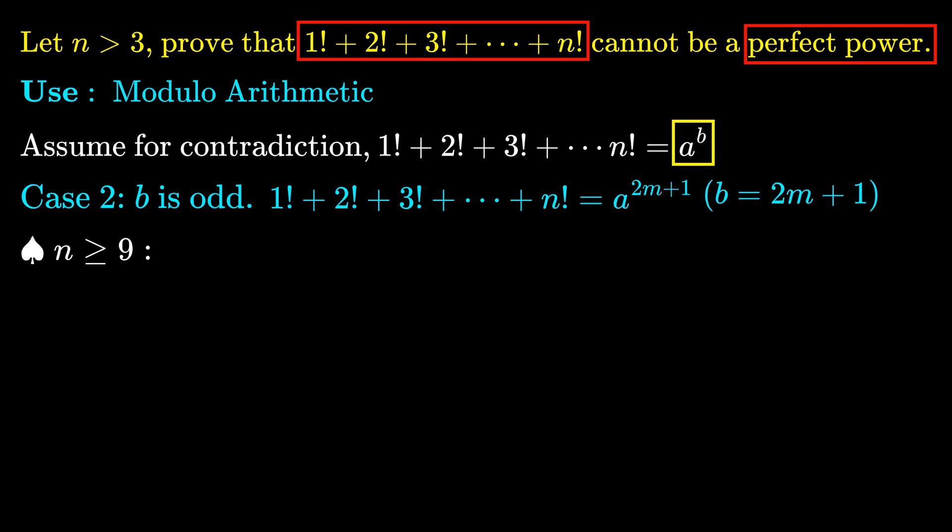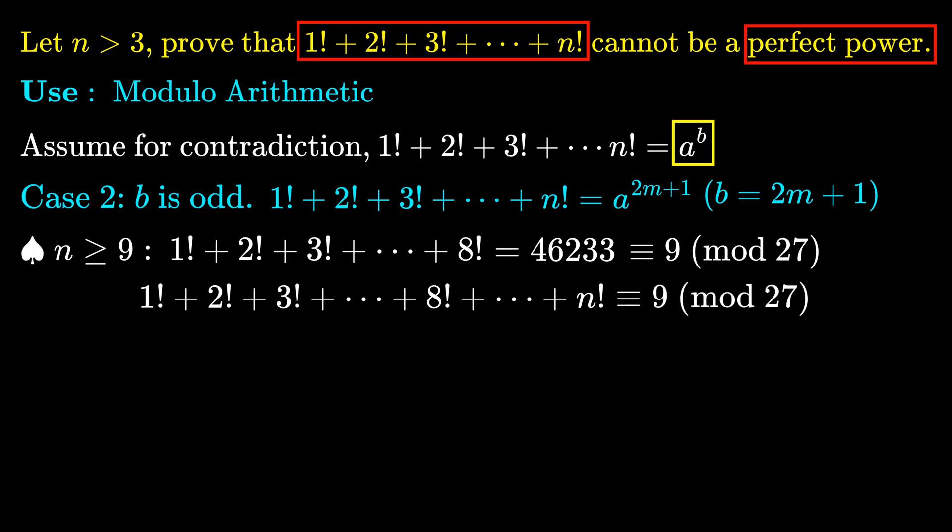We observe that 1! + 2! + ... + 8! = 46233, which is congruent to 9 mod 27. That is, the sum is a multiple of 9 but not a multiple of 27. If we continue to add more factorials up to n!, the sum is still congruent to 9 mod 27, since factorials greater than 8! are all multiples of 27.